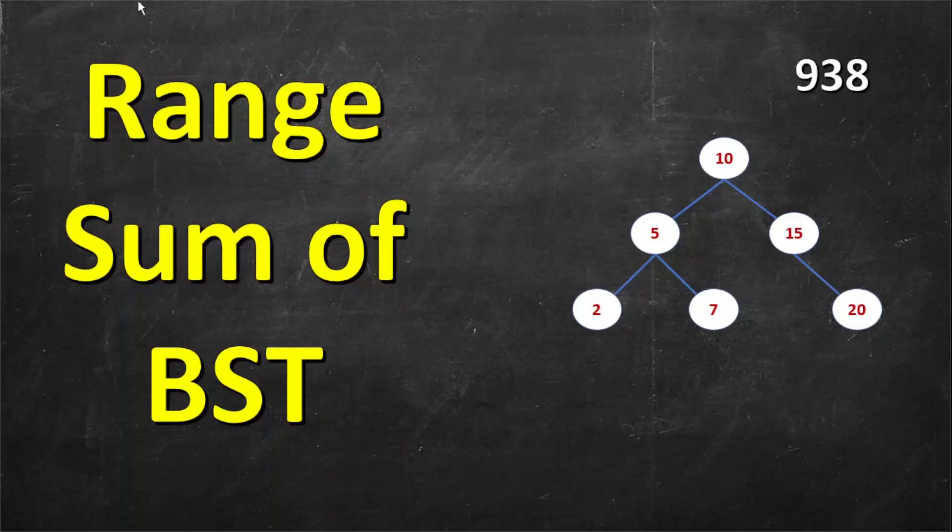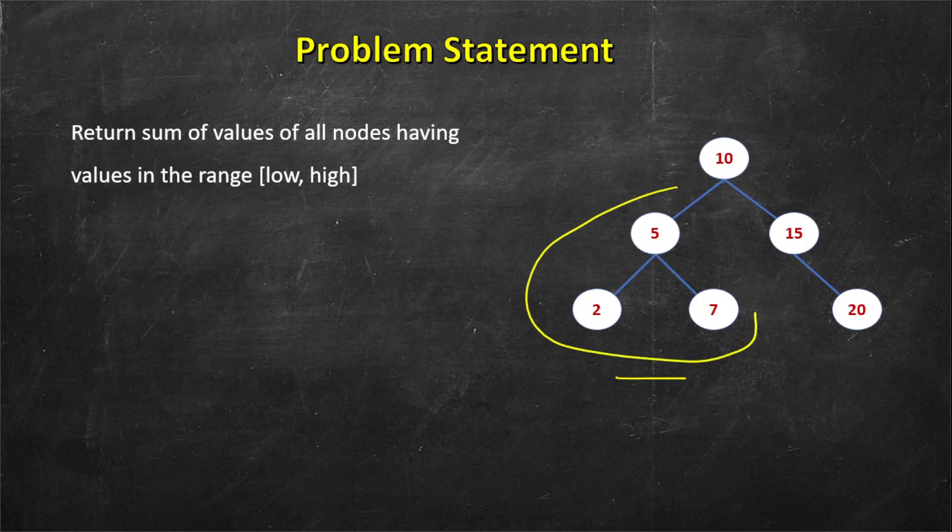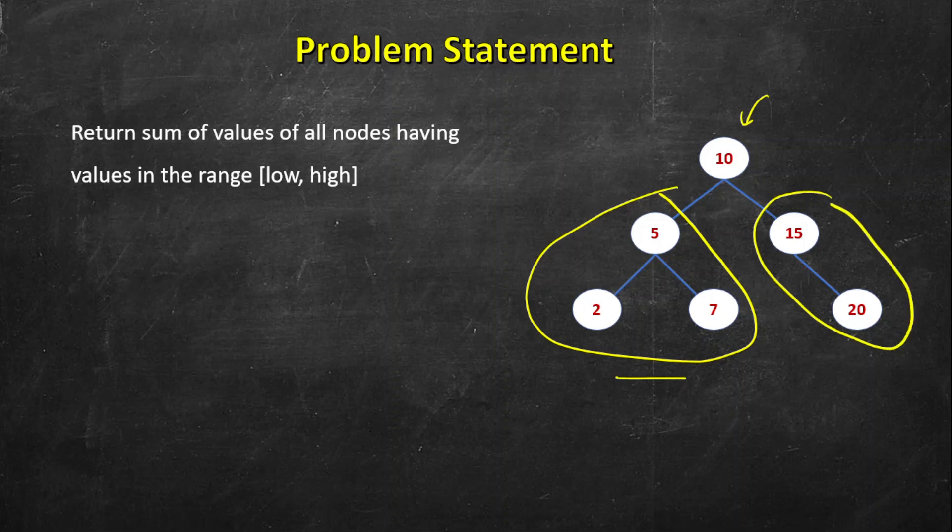In this video we will look at range sum of a binary search tree. Let's see the problem statement. We have a binary search tree where all the nodes in the left subtree of a given node will be less than the current node, and all nodes in the right subtree will be larger than the current node. Here you are given a range, for example the range can be 7 to 15.